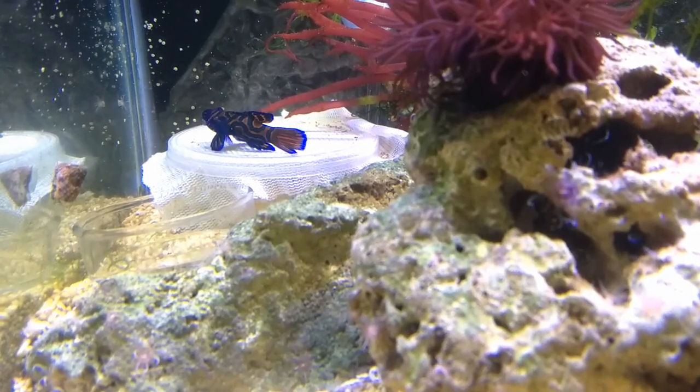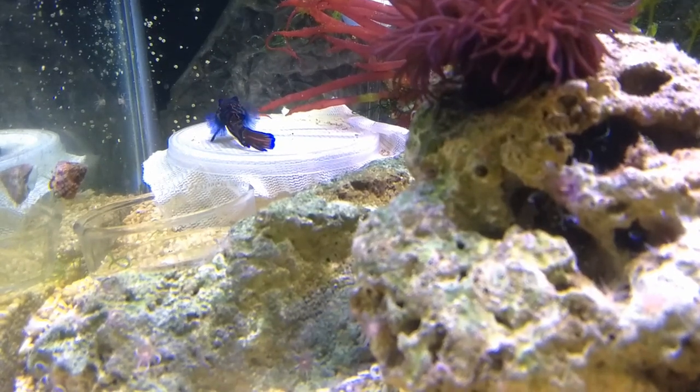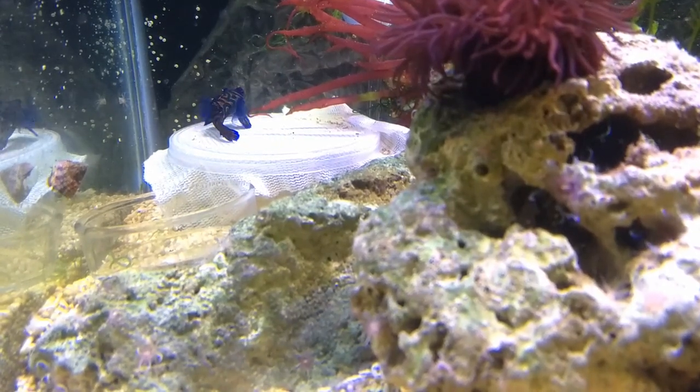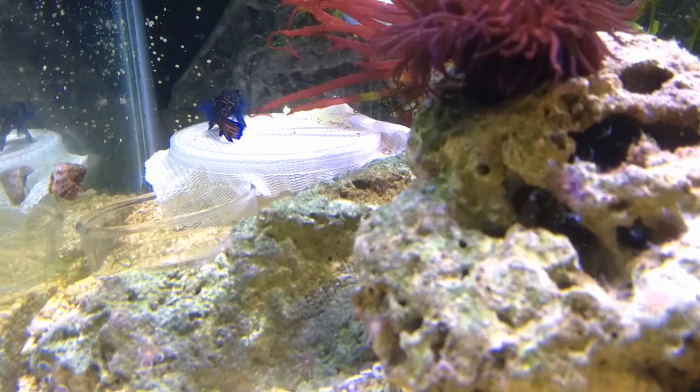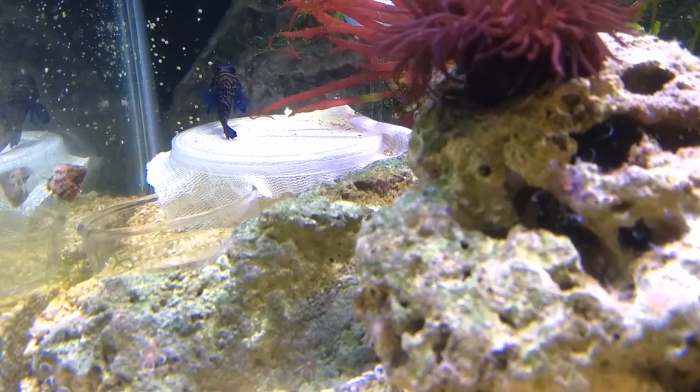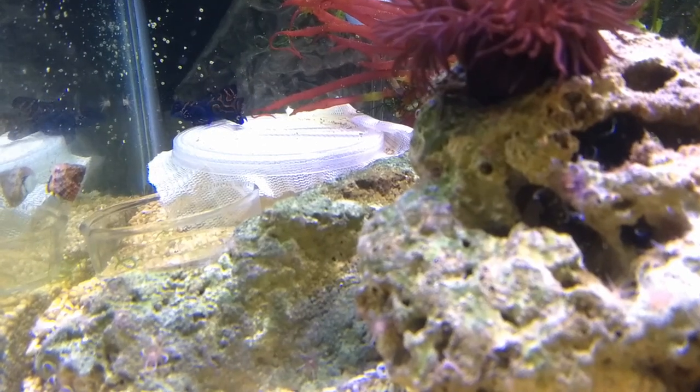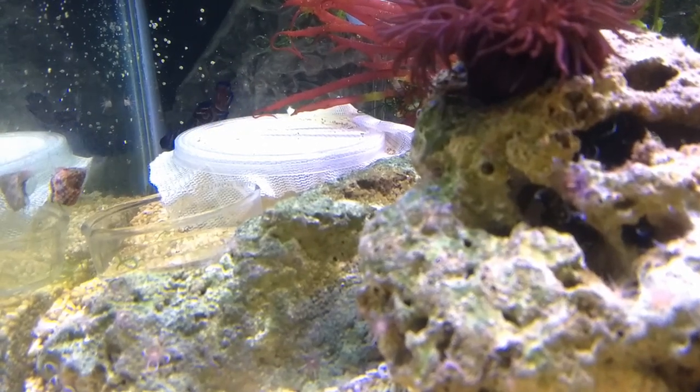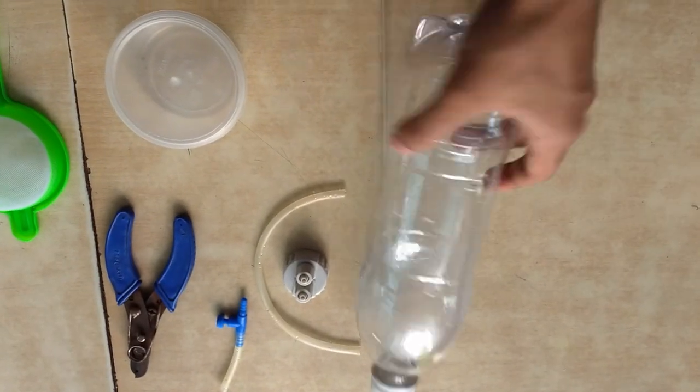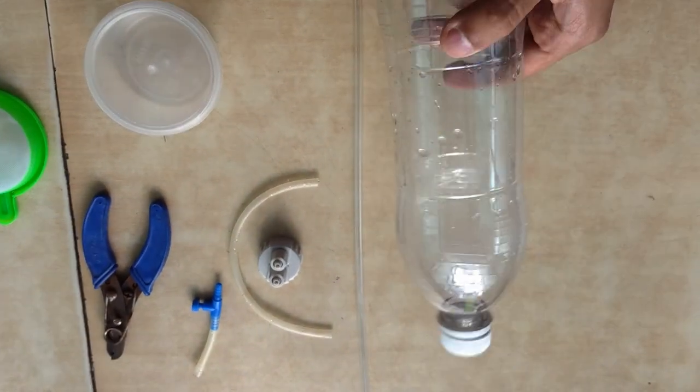You guys know that I had added a Tom's hatch and feeder, but mandarins don't generally eat from the water column, so I had to build something like this. It's basically an inspiration from Paul B from Reef to Reef. So here's what you need: this 750 ml bottle.